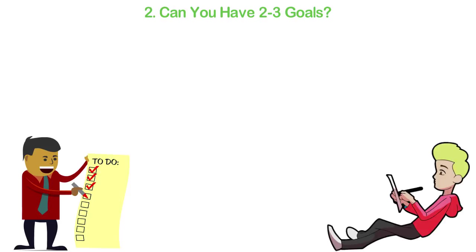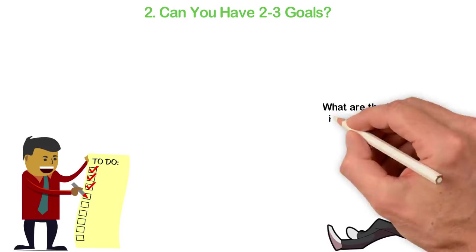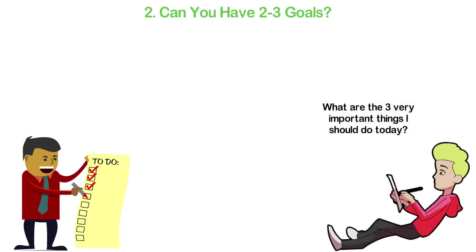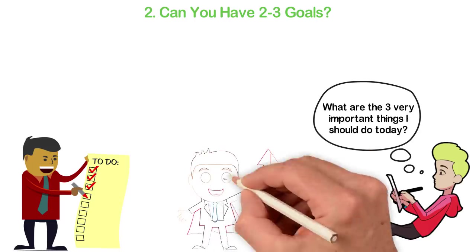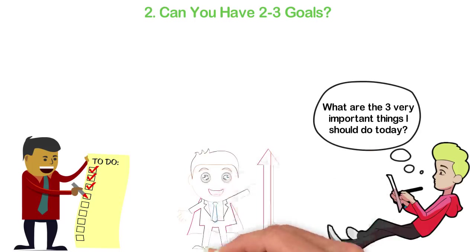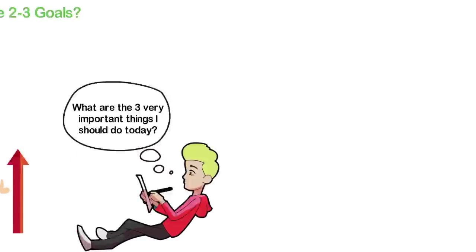When you wake up each morning, ask yourself, what are the three very important things I should do today? If you're in control of your time, start with those things and say no to any other thing including the internet if possible. Focus on these three very important things every day of your life and you'll have more progress than most people.